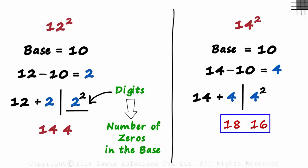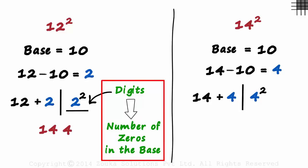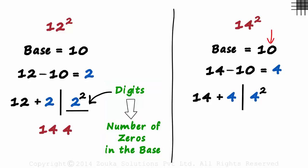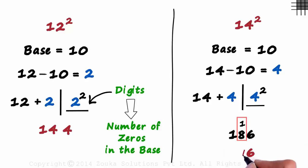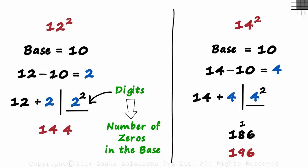14 plus 4 is 18 and 4 squared is 16, so the answer might seem to be 1816 — but this is a very common mistake students make. Don't forget: the number of digits on the right will be equal to the number of zeros in the base. As there is just one zero in the base, we will have just one digit on the right. So 4 squared is 16 — we carry the 1 over and write 6 on the right. 8 plus 1 is 9, giving us 196. 14 squared is 196.